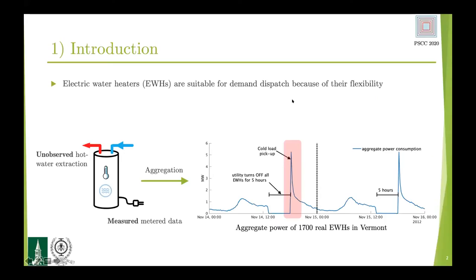If you look at large aggregations of electric water heaters, we know that their power consumption varies depending upon the time of day. Mornings are expected to be a large power consumption period because of larger water draws compared to the afternoons. The second thing is the effect of utility control, such as the data collected by a local utility in Vermont for about 1,700 electric water heaters. In this demand response program, the entire population was forced off for about five hours, and we're all familiar with the problem of cold load pickup. These two reasons motivate us to work on this problem.